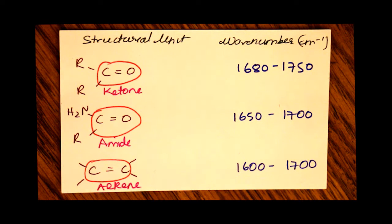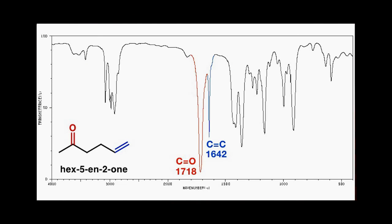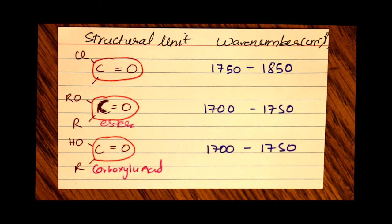For a carbon double bonded to another carbon in an alkene, the range of the peak is between 1600 and 1700. For a carbon double bonded to an oxygen that's also bonded to a chlorine, the peak shows up between 1750 and 1850 inverse centimeters.